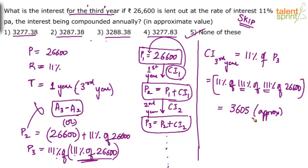To be precise, the calculation is: 11 × 111 × 111 × 26600 divided by 100³ (since there are three percentages). You can also use the effective percentage method: find the effective compound interest percentage for three years, find it for two years, take the difference, and apply that percentage on 26600.